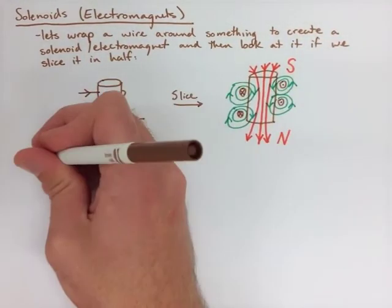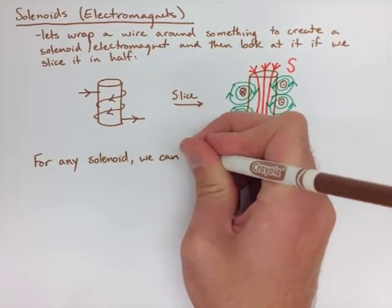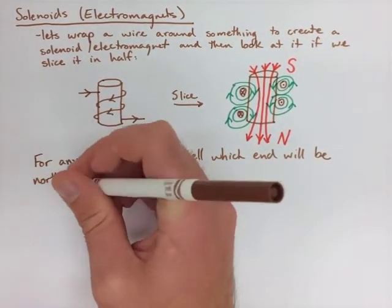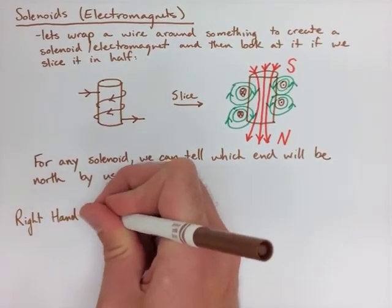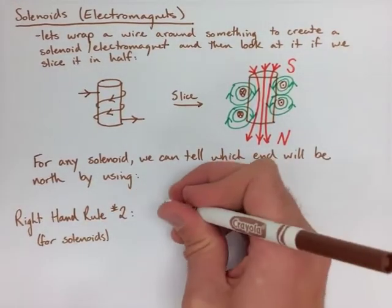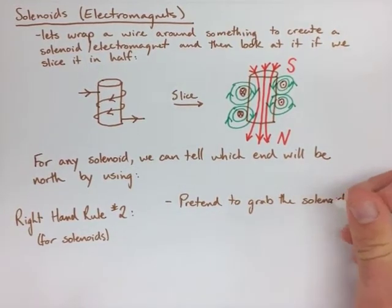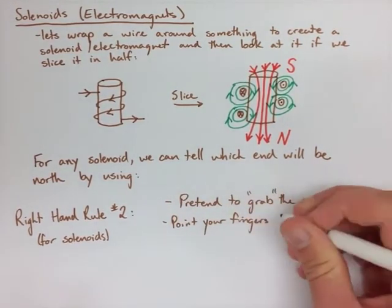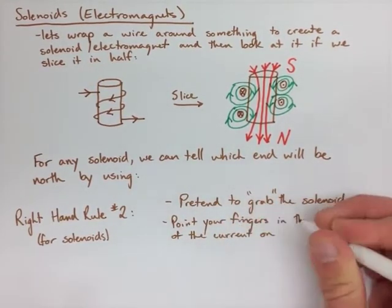Now, for any solenoid, we can find out which end will be north by using our right-hand rule number two, which is our right-hand rule for solenoids. The first thing we're going to do is pretend to grab the solenoid. Just like we did with the last right-hand rule, we're going to pretend to grab the object. In this case, we're going to point our fingers in the direction of the current. So if we know the current's going in one side, that's the way we point our fingers in and they come out the other side of the solenoid. Now, your thumb is now going to point in the direction of the north pole. So fingers point in the direction of the current on the front of the solenoid. Your thumb points in the direction of the north pole.